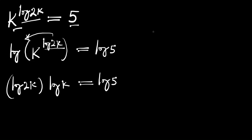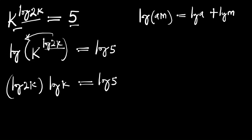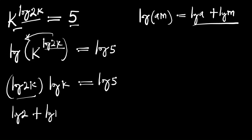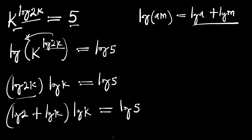Now if you remember this identity: log of a times n equals log of a plus log of n. Let's go ahead and apply this identity. We are going to have log of 2 plus log of k, and this will multiply log of k, and this equals log of 5.